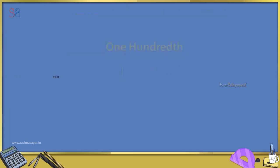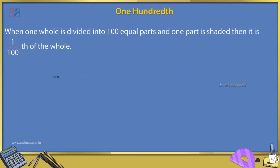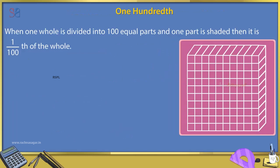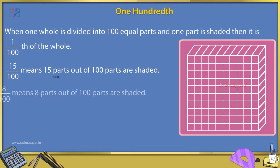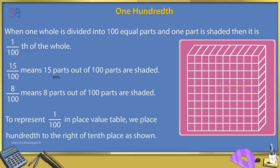One hundredth: When one whole is divided into 100 equal parts and one part is shaded, then it is 1/100 of the whole. 15/100 means 15 parts out of 100 parts are shaded. 8/100 means 8 parts out of 100 parts are shaded. To represent 1/100 in a place value table, we place hundredths to the right of the tenths place.